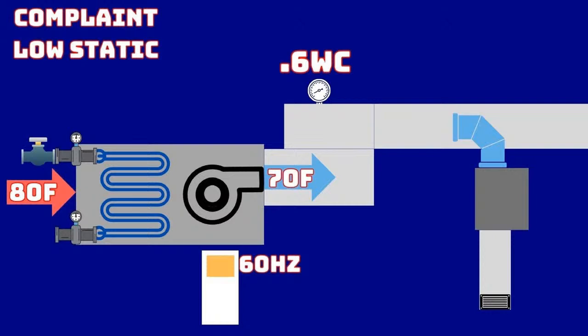The air handler is on the bottom level and serves the entire building. Regarding whether a bypass is open — this is a variable volume system, so we don't have a true bypass; we have a VFD controlling that. Before variable volume became common with VFDs, air handlers used guide vanes similar to what a chiller would use, or they had VFDs retrofitted onto older equipment.